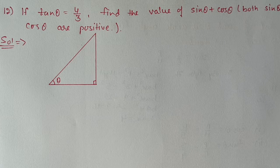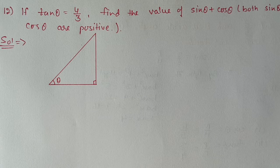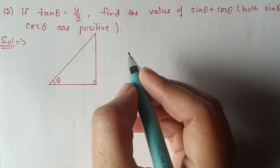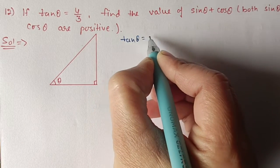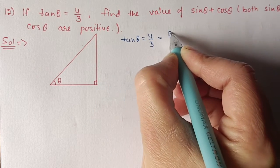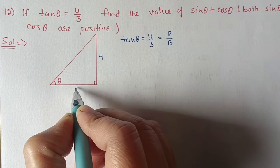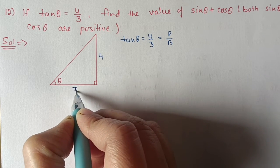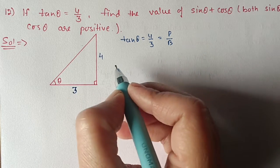Next question: if tan θ equals 4 by 3, find the value of sin θ plus cos θ — both sine and cos are positive. tan θ is given as 4 by 3. Since tan θ is perpendicular by base, perpendicular is 4 and base is 3. Now use Pythagoras theorem to find out the hypotenuse.